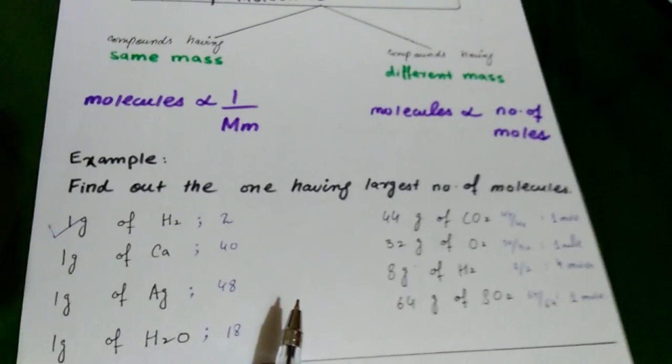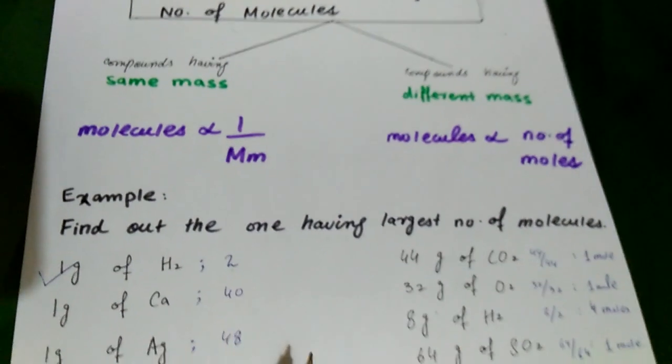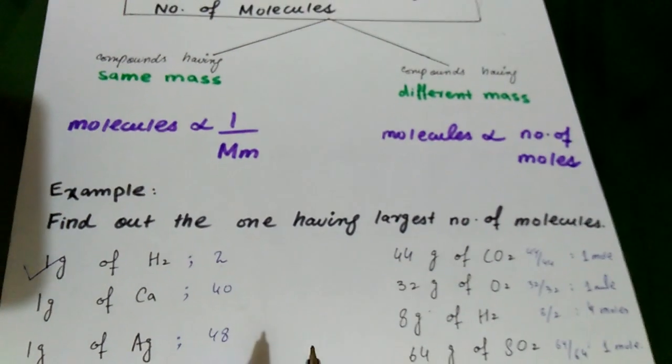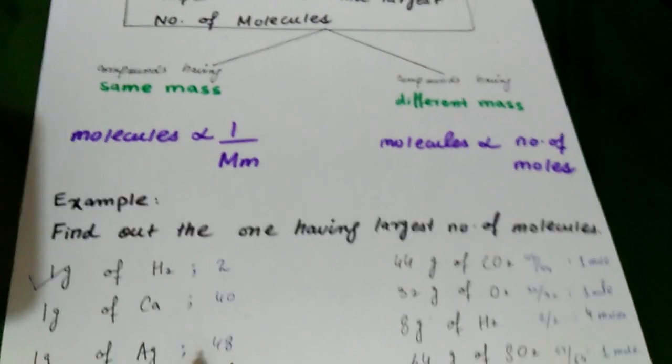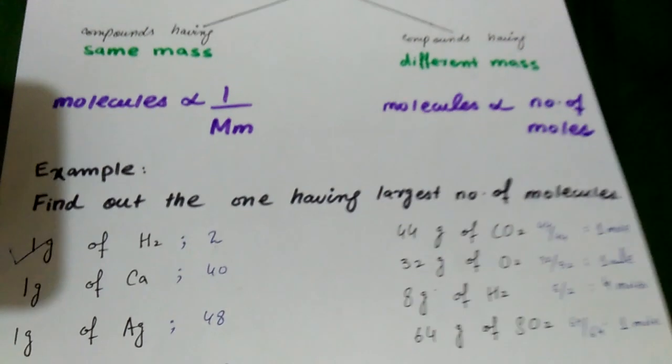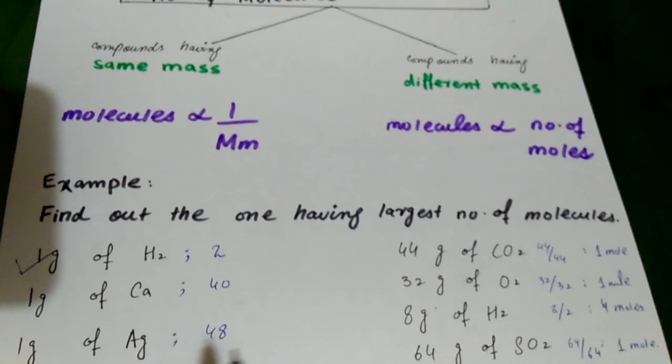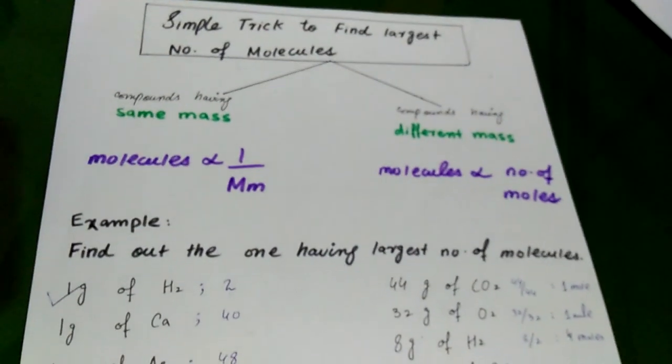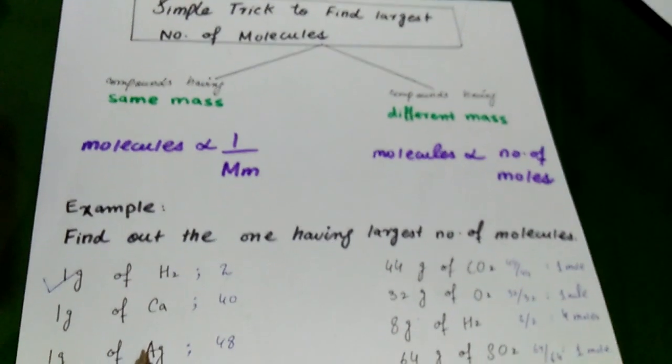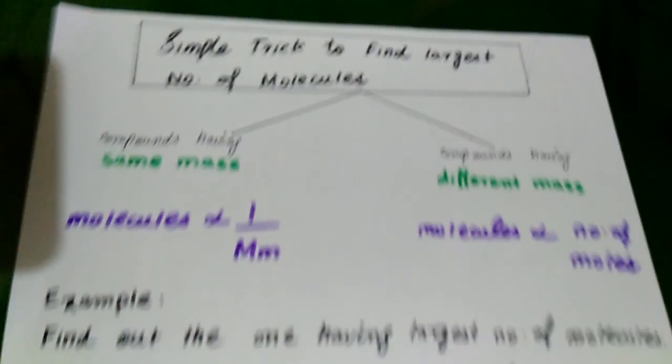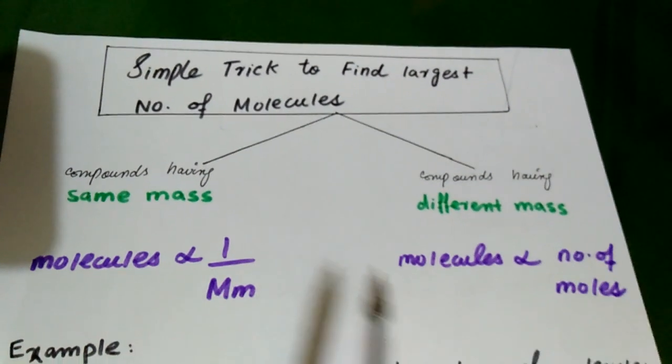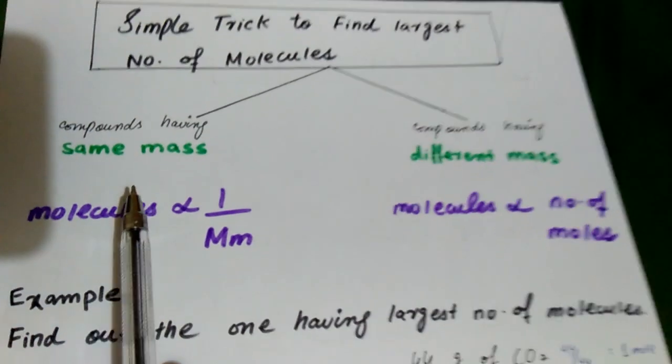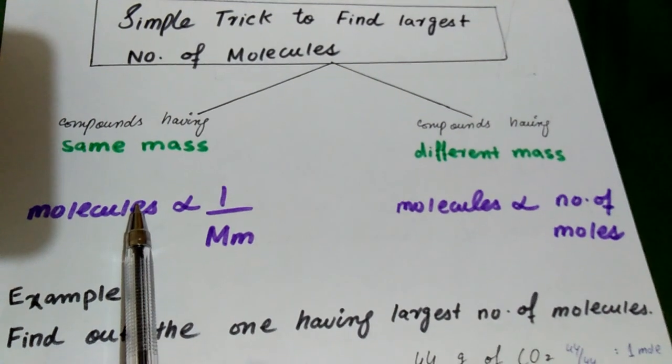After that, there is another one that is frequently asked MCQs. We ask that there is a large number of molecules. Which one? If we normally find out, we need to find out the number of molecules. But to find out which MCQs are the largest number of molecules, we have two tricks. Very simple. Because there are two conditions. We have to follow these tricks if they don't have compounds.